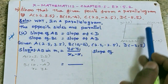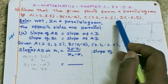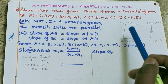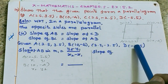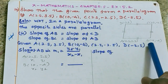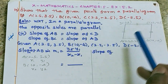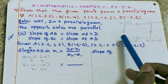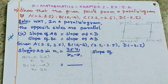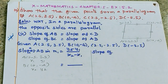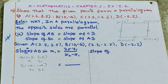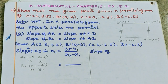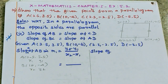So here, who is parallel to whom? AB is parallel to CD - so slope of AB and slope of CD must be equal. Next, BC is parallel to AD - their slopes must also be equal.